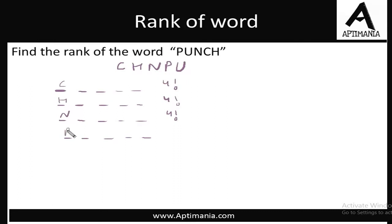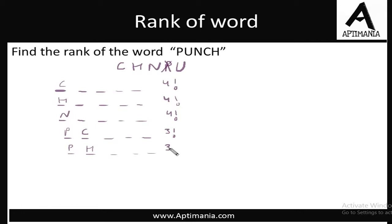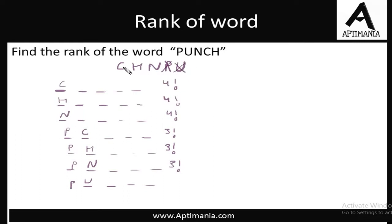With P fixed, we go back to C for the second position. C was not required, so 3 positions and 3 letters remain — arranged in 3 factorial ways. We replace C with H — also not required, so again 3 factorial words. Then after H comes N — also not required, again 3 factorial words. After N comes U — U was required in the actual word, so we cancel it and restart from C. So we have P-U fixed, and we start again from C for the third position.